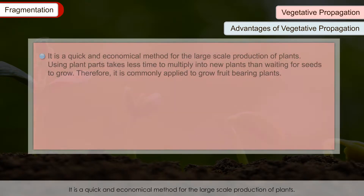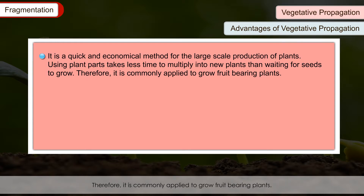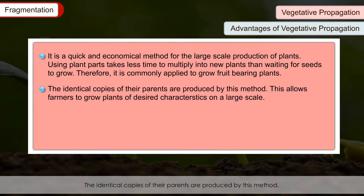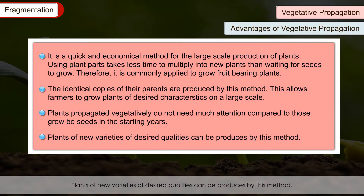Advantages of Vegetative Propagation: It is a quick and economical method for the large-scale production of plants. Using plant parts takes less time than waiting for seeds to grow, so it is commonly applied to grow fruit-bearing plants. The identical copies of parents are produced by this method, allowing farmers to grow plants of desired characteristics on a large scale. Plants propagated vegetatively need less attention in the starting years, and new varieties of desired qualities can also be produced by this method.